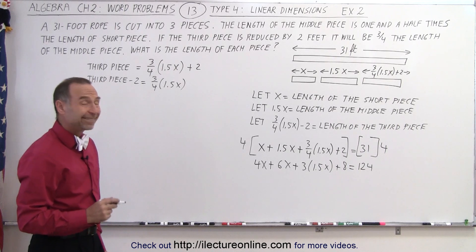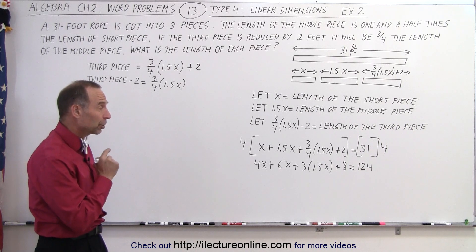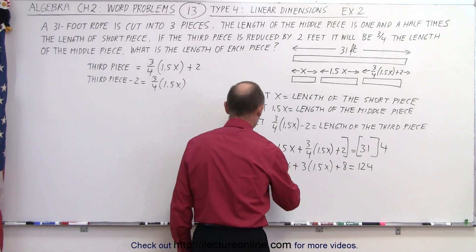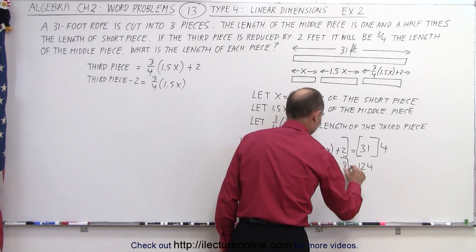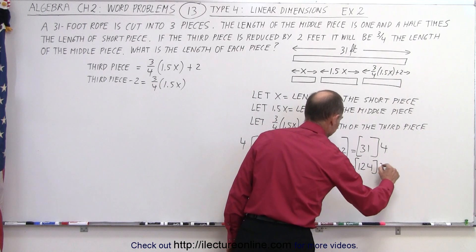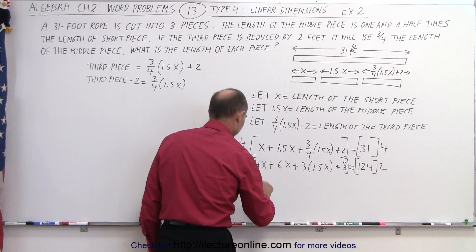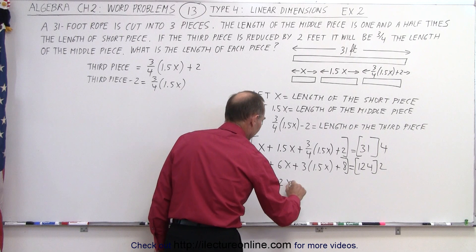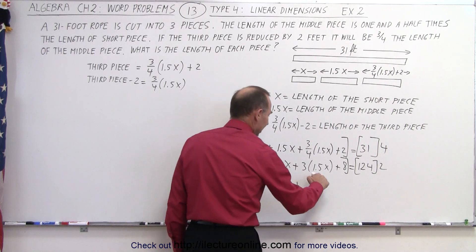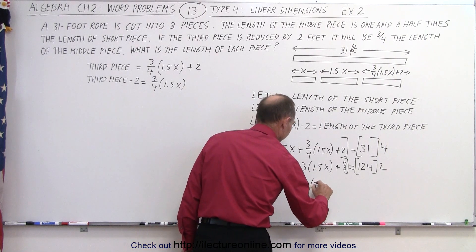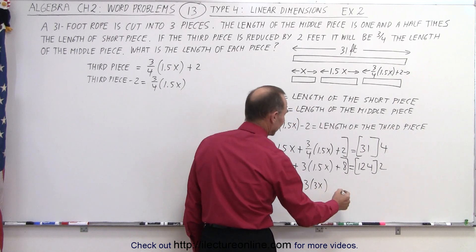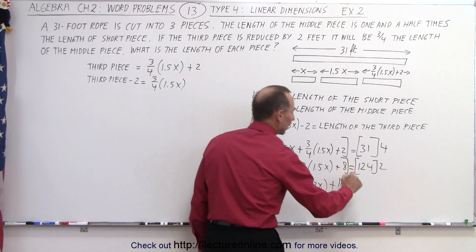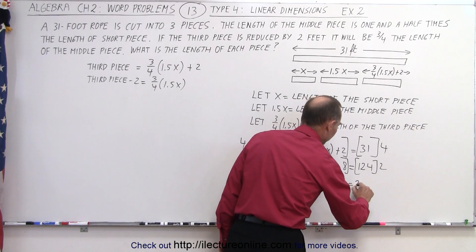Next we want to get rid of the decimal, and we can do that by multiplying everything by two, because two times 1.5 equals three. So we get 8X plus 12X plus three times 3X, which is 9X, plus two times eight, which is 16, equals two times 124, which is 248.